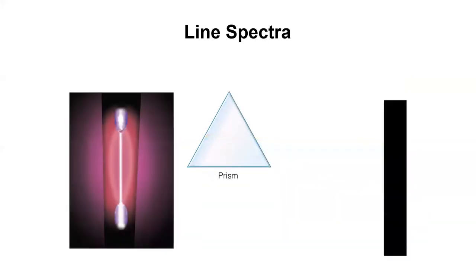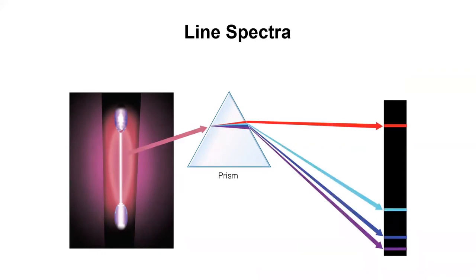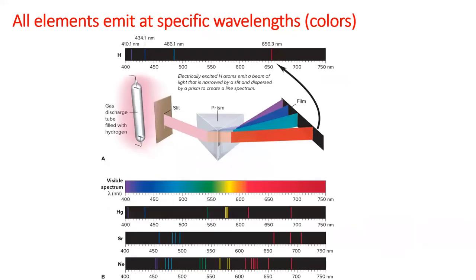When scientists send light emitted from a single element through a prism, it separates the element's colors into specific lines. This is called the element's line spectrum. Since each element has unique energy levels and emits unique frequencies of light, each element also has a unique line spectrum. You can think of each element with its own spectral fingerprint. This is how astronomers can determine which elements are in stars hundreds of light years from Earth.